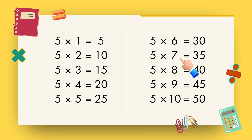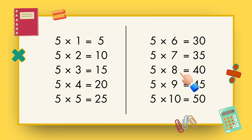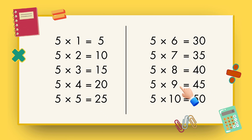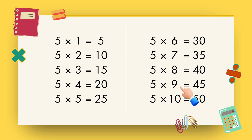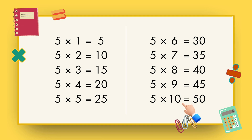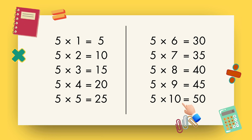5 7s are 35, 5 8s are 40, 5 9s are 45, 5 10s are 50.